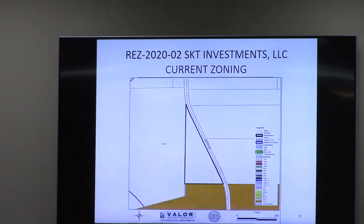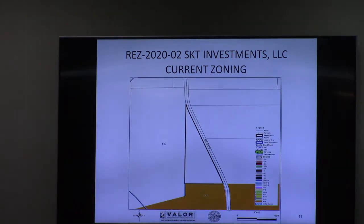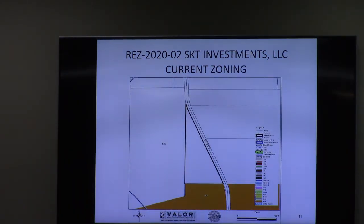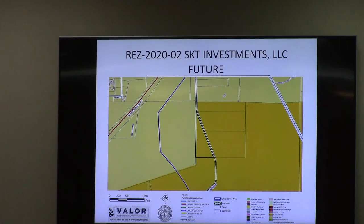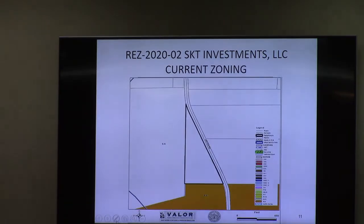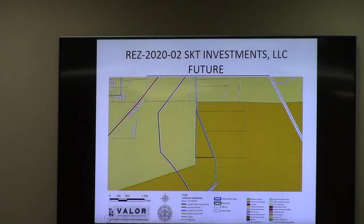There is adjacent RA zoning to the south. The comprehensive plan does list RA zoning as permitted zoning within a rural residential character area. The TRC has no objectionable comments. However, the health department did stress that well and septic installation for any involved dwellings will be subject to health department requirements. Staff finds the request consistent with the comprehensive plan.